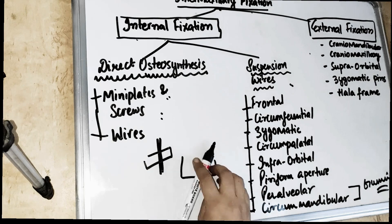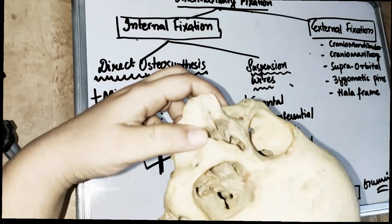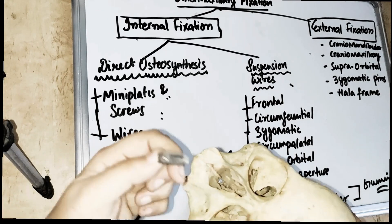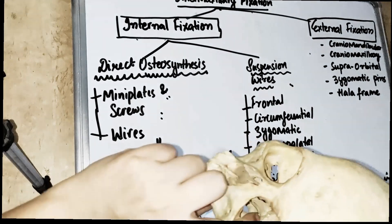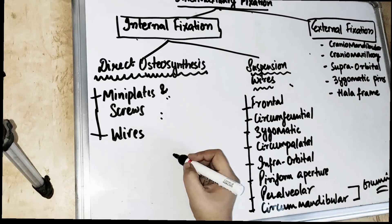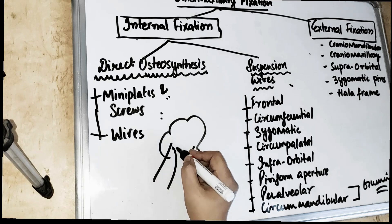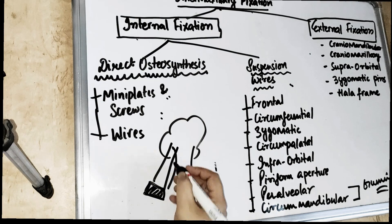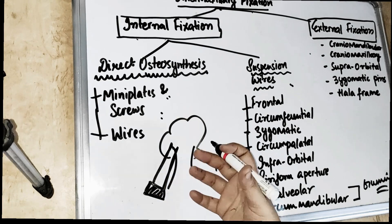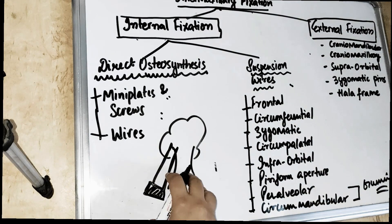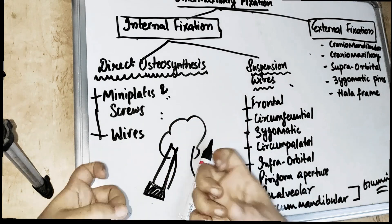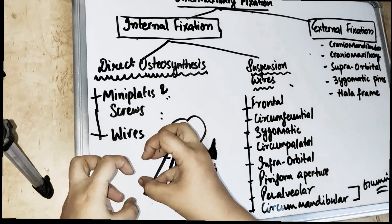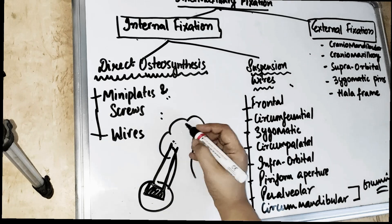Suppose we have a mid-facial fracture — a Le Fort fracture. We suspend a wire to hold the maxilla, taking the fracture segment and suspending that wire to a fixed point. Think of it like a swing attached to a tree: the swing's ropes are suspended from both ends, just like the wire is taken from both ends of the fracture segment and suspended. We call this craniofacial suspension. The fracture segment is engaged with a wire and connected to a fixed point — which can be the frontal bone, the zygomatic region, and so on.